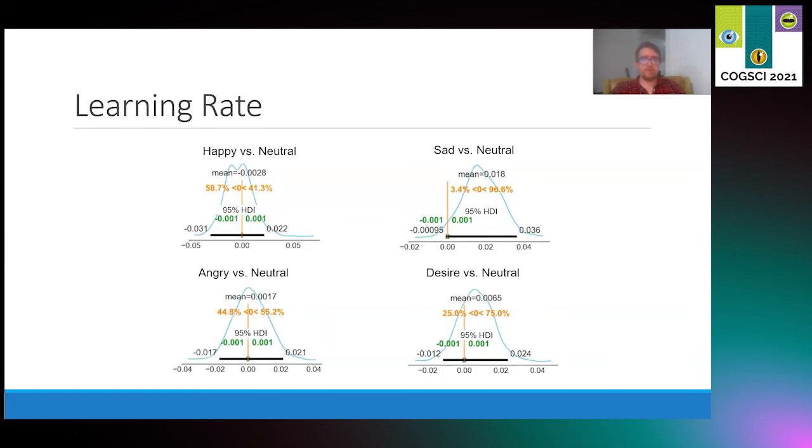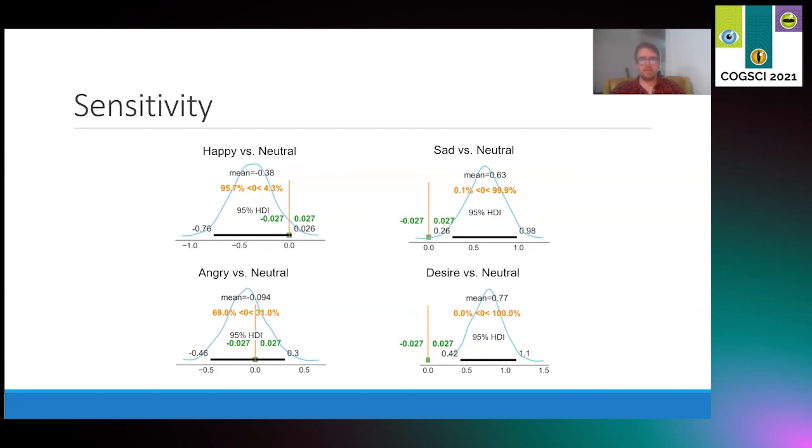Next, turning to learning rate, we didn't see too many effects here, but we did see that the sad condition was just on the cusp of having a substantially greater learning rate than did the neutral condition. This indicates that people in the sad condition were more prone to larger expected values when following feedback.